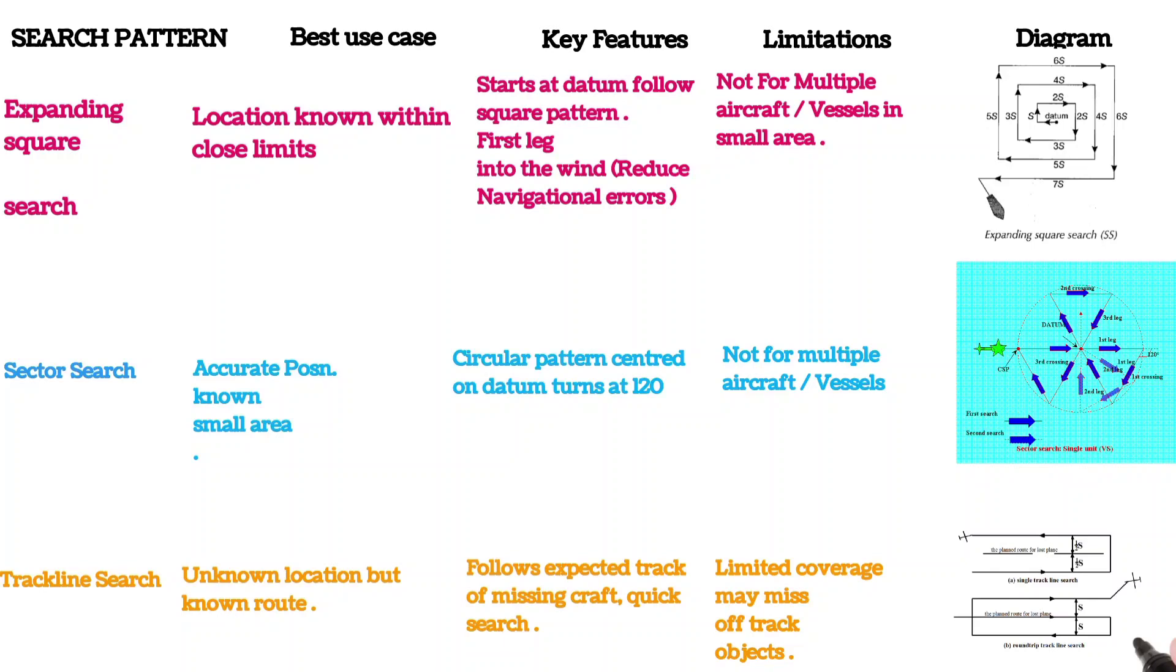This is the limitation of this track line search. Then we have the diagram of this.